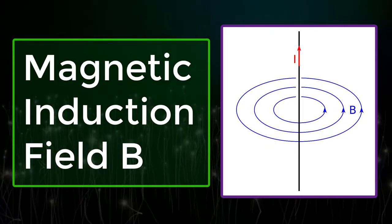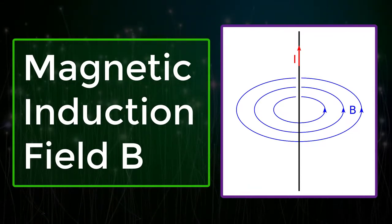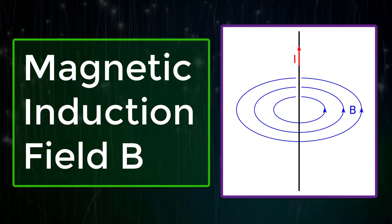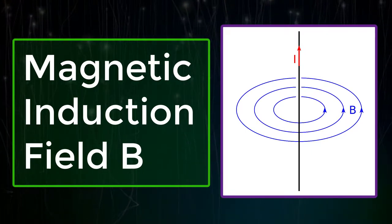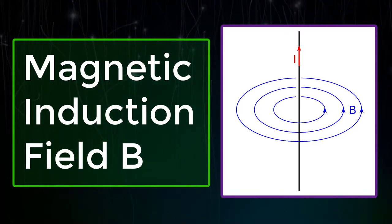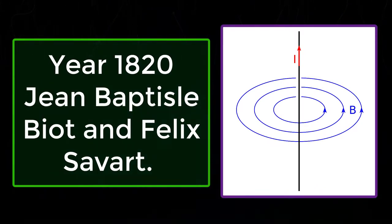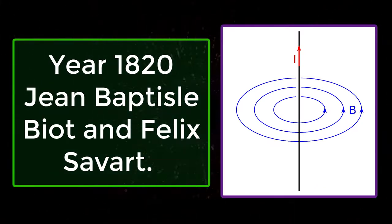The Biot-Savart law is used to determine the magnetic induction field B near a current carrying conductor, or we can say it gives the relation between the magnetic induction field generated by its source current element. The law was stated in the year 1820 by Jean Baptiste Biot and Felix Savart.